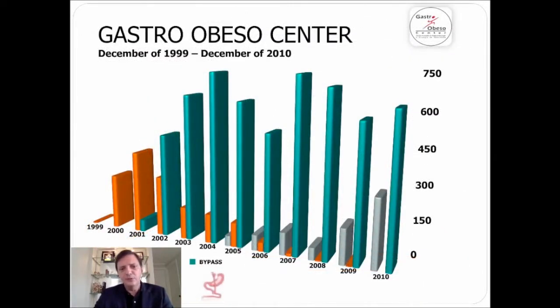Our group, as you can see here on this chart, in orange we have bands. We peaked in 2001, then it goes down. Then in green, you see the lap bypass, and it grows and stays kind of stable.